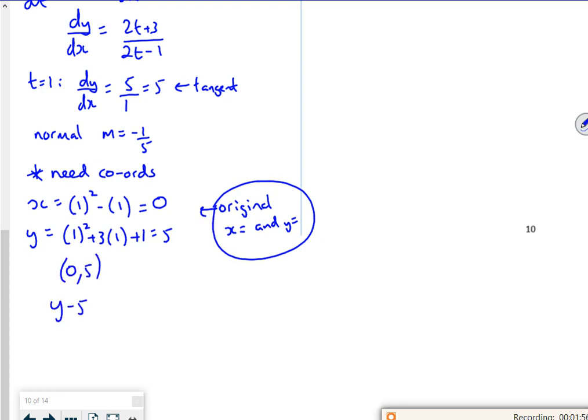So it's just y minus 5, minus 1 fifth, x minus nothing. Does it ask it for any specific way? No, so that's fine.